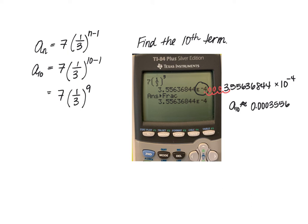So what we're basically getting here is that the 10th term as an approximated decimal is about 0.0003556 rounded. But if you're working on a computer homework system, most systems are not going to accept that answer and will want an exact answer.